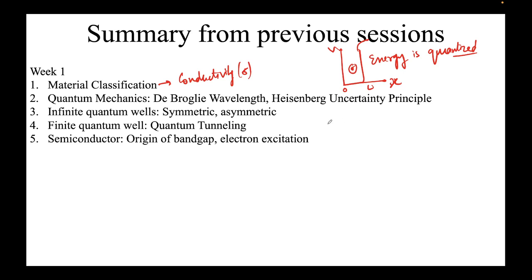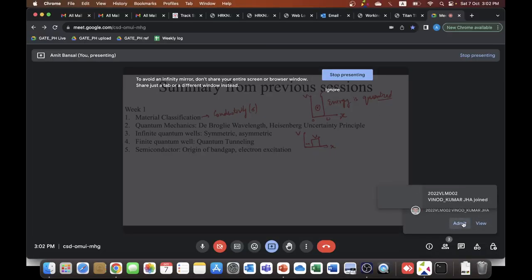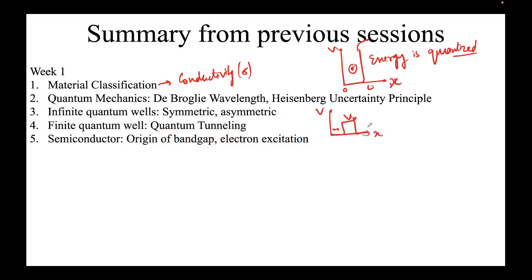We also saw a potential barrier — potential as a function of position x. If a particle comes from the left and the barrier height is V₀, classically it cannot cross since it has lower energy. But in the quantum world there's a finite probability of finding the particle on the other side — this is quantum tunneling, depending on barrier height, particle energy, and barrier width.